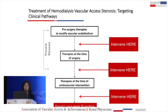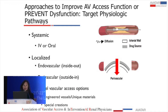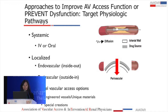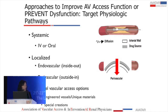So we have our clinical pathway. There are two major strategies: a systemic strategy, which is non-targeted, or a localized strategy. Systemic strategies — we can give something intravenously or orally to affect the whole body, and hopefully it'll affect the vascular access. Or we can have localized therapies with endovascular devices such as angioplasty, with an effect going from inside to outside of the vessel to increase patency. Or we can apply a drug from inside the lumen to the outside — an endovascular procedure. Or we can have perivascular interventions going from the outside at the adventitia to the intima, and then novel access options.